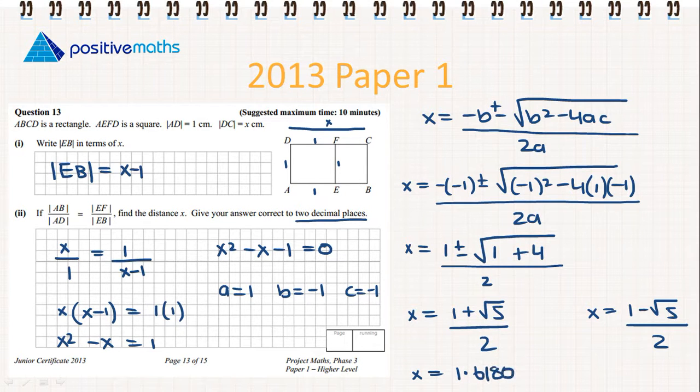So we get x equals 1.6180 and x equals minus 0.61. So we can't have two measures for the same distance. What we need to consider is which one to choose. We cannot have a negative value for x, so we will not be using minus 0.61. We will be using x equals 1.6180.